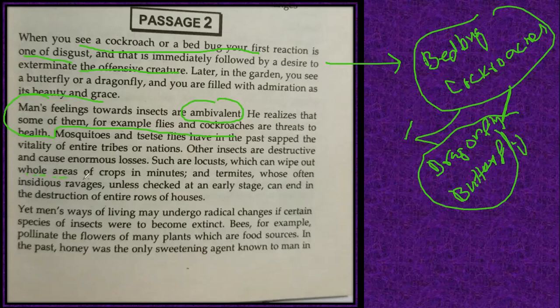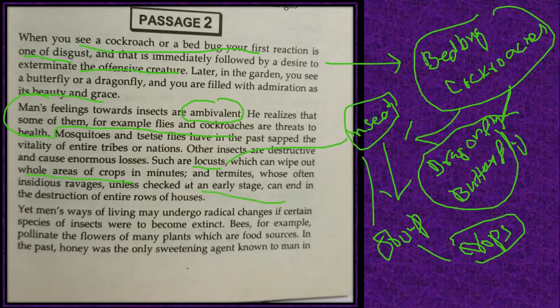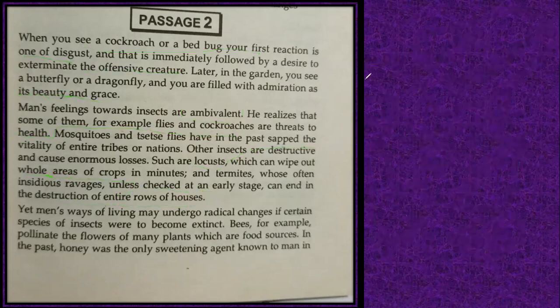Locusts are a special kind of insect, very dangerous for crops. They come to farms in a battalion — a group — and eat each and everything in the fields, destroying everything. Termites also cause serious ravages unless checked at an early stage; termites eat entire rows of houses and are very dangerous. Yet man's way of living may undergo radical changes if certain species become extinct.